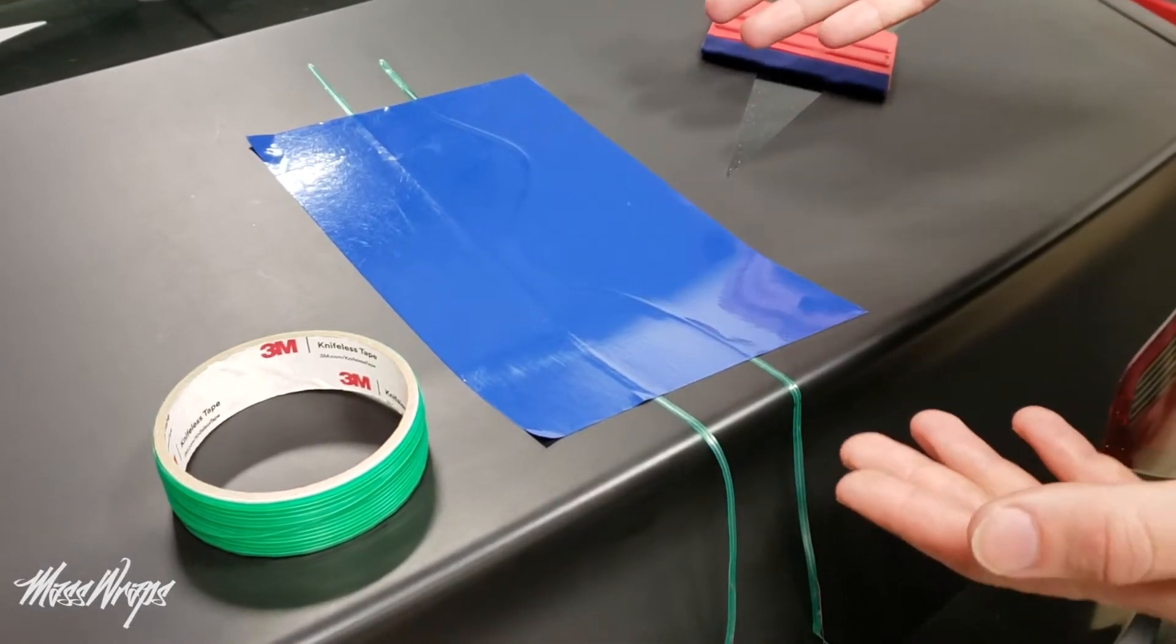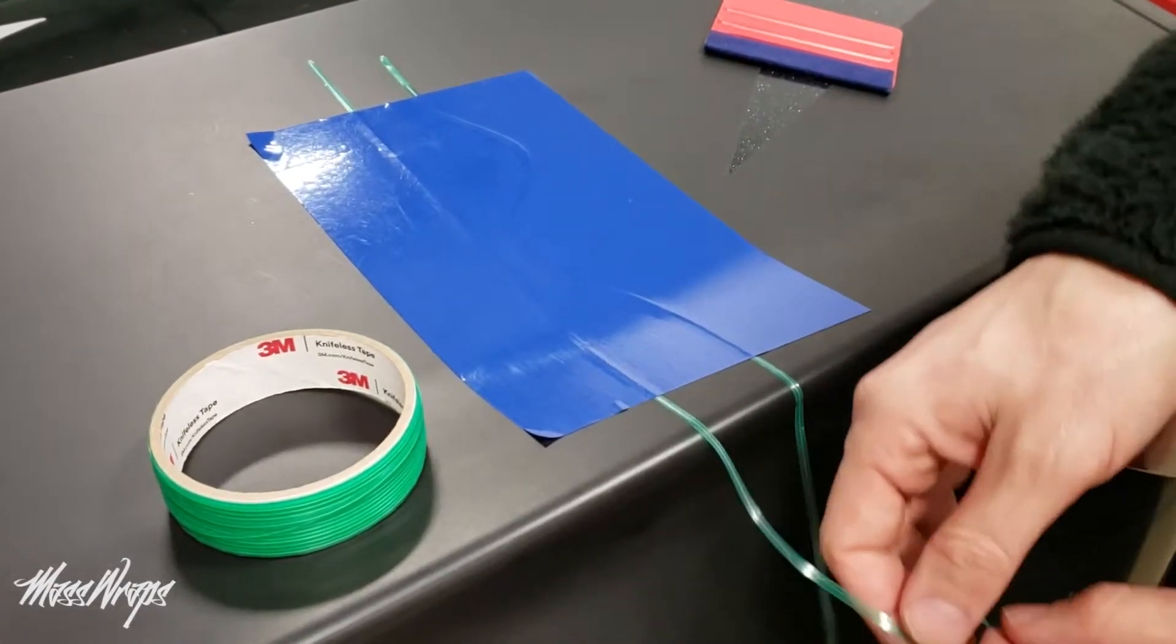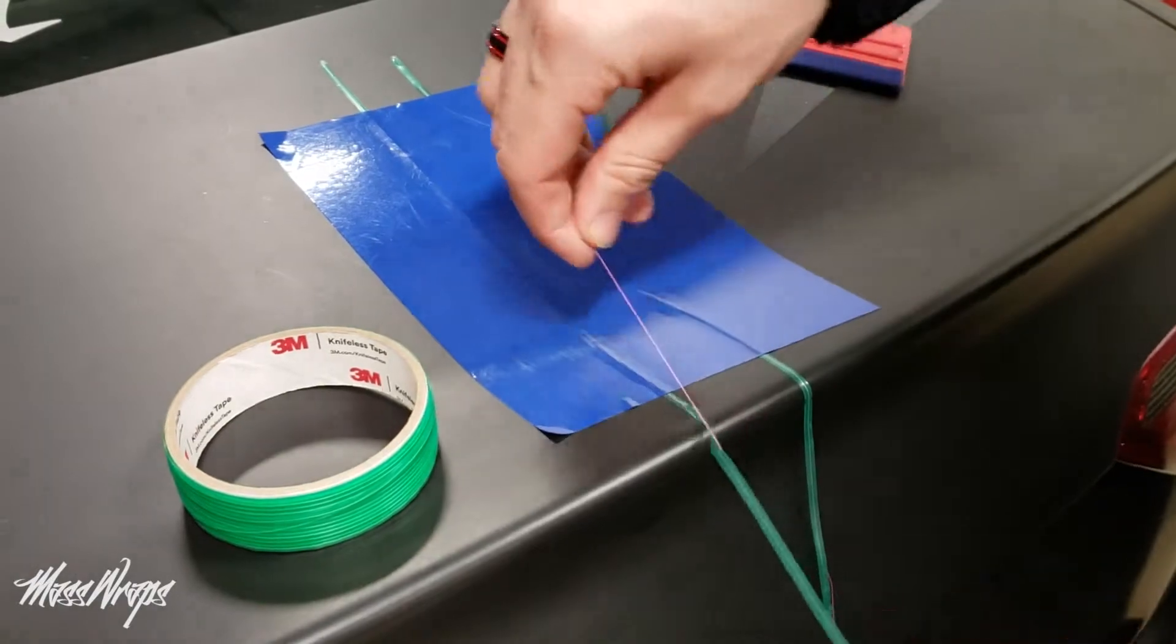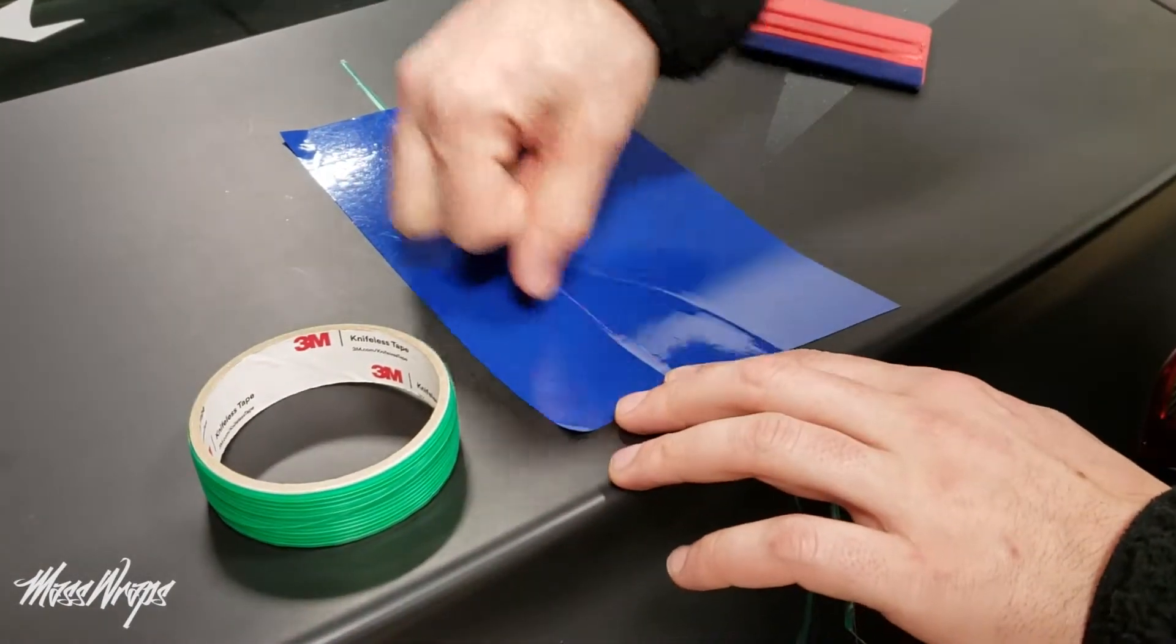First the knifeless tape is laid down on the vehicle and then the vinyl is laid on top of it. We then pull the wire out.